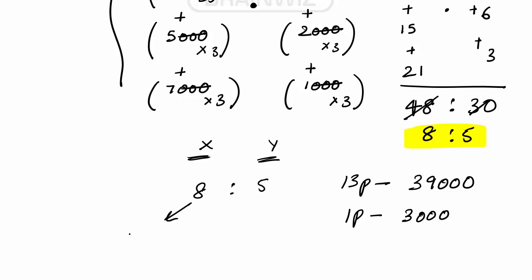And the share of X is Rs.24,000 - 8 parts into 3000 - and 5 parts into 3000, which makes Rs.15,000.